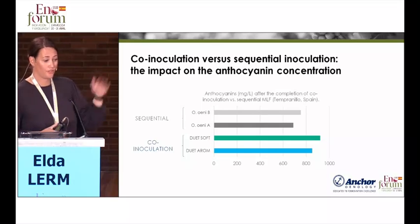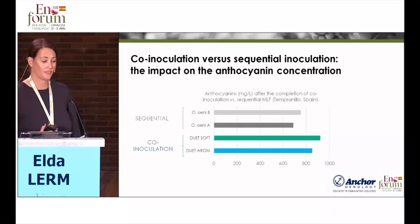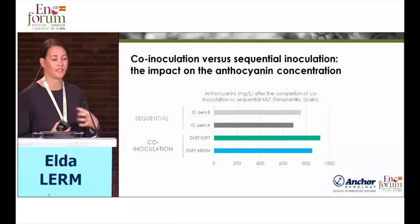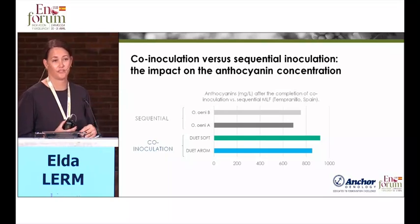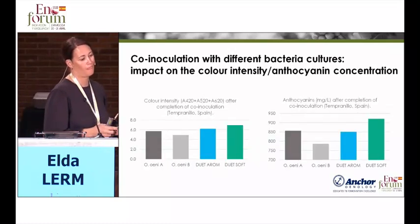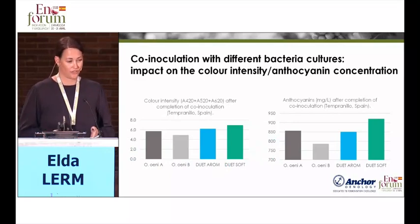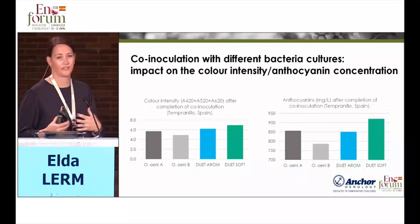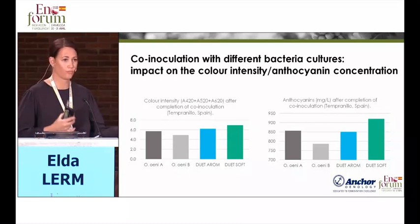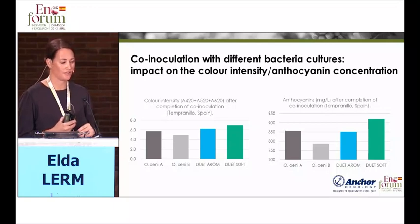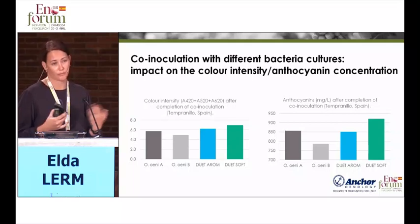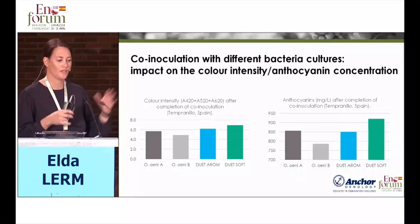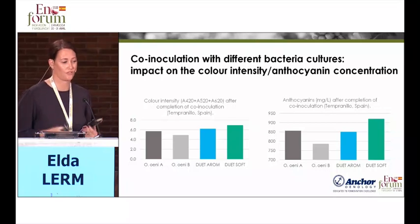Just to show you the difference between sequential and co-inoculation and the impact on anthocyanins: in general, co-inoculation tends to result in higher anthocyanin concentrations after malolactic fermentation, though again this is strain-dependent. When looking at different bacteria cultures under co-inoculation, you can see they also differ in their impact on color and anthocyanins. It really depends on the bacteria you select as well.